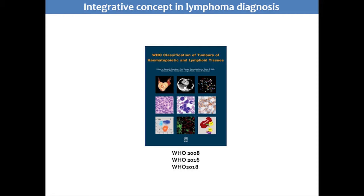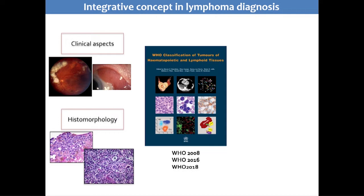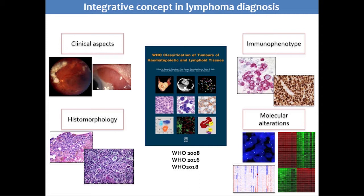I became a consultant histopathologist in about 2002, and in a very short space of time there have been revisions, with this volume increasing in size and the number of entities we all have to know becoming quite demanding. Essentially, you classify the lymphomas according to the clinical aspects, the histomorphological features, the immunophenotype, and then the genetic or molecular alterations, which are typically chromosomal translocations.